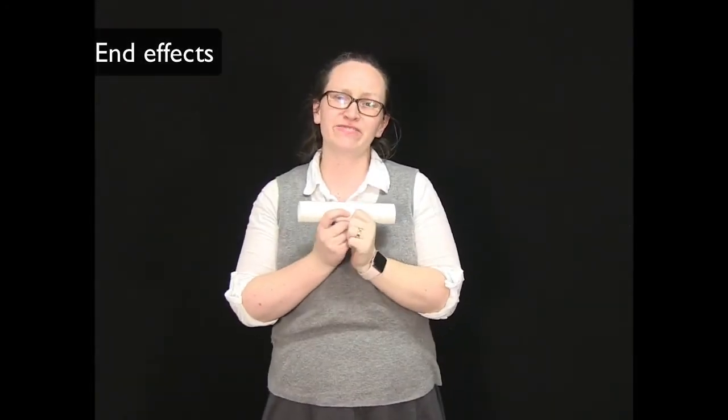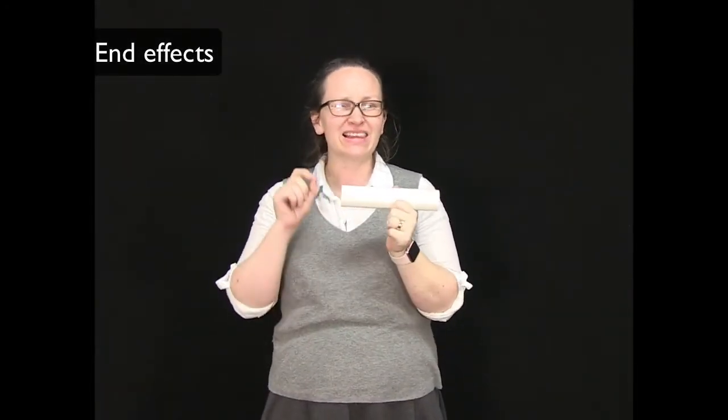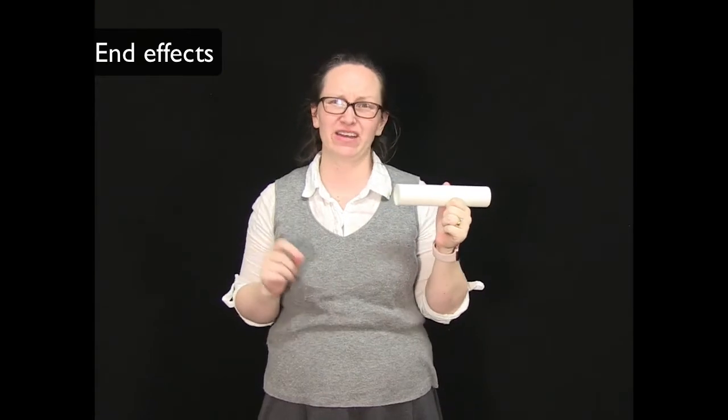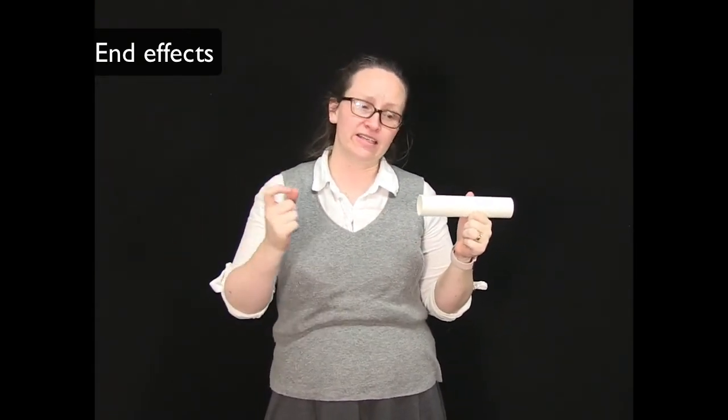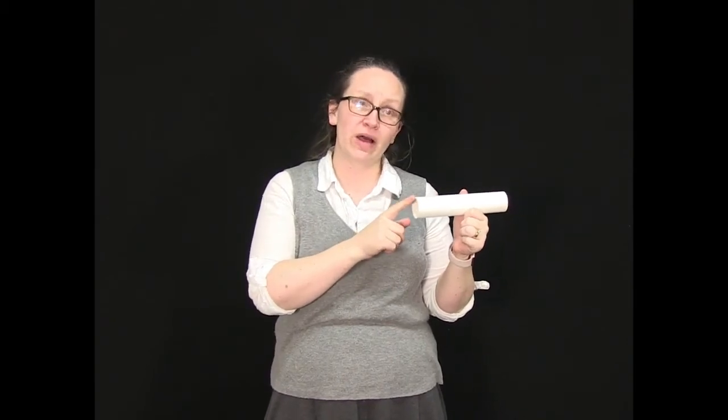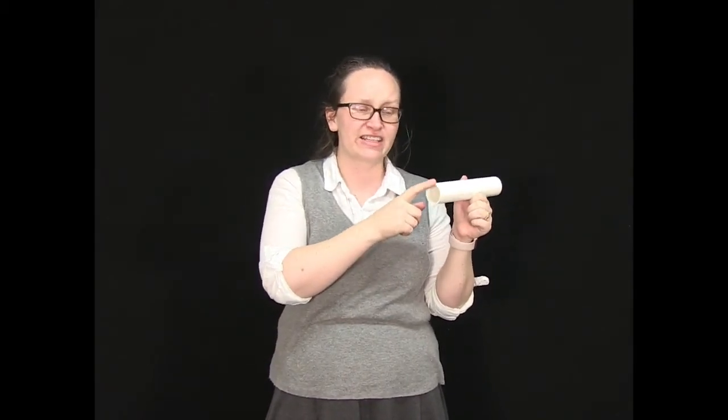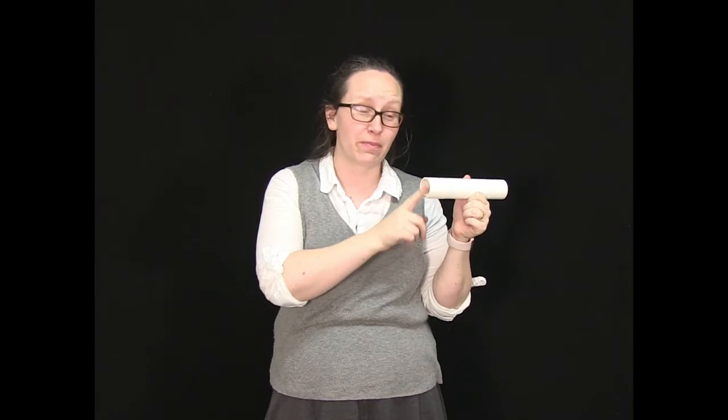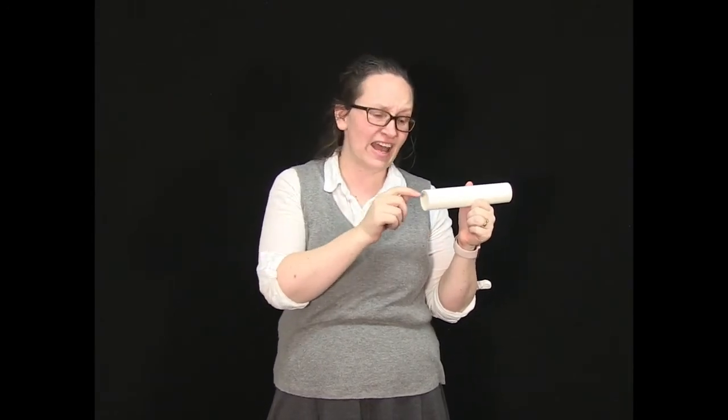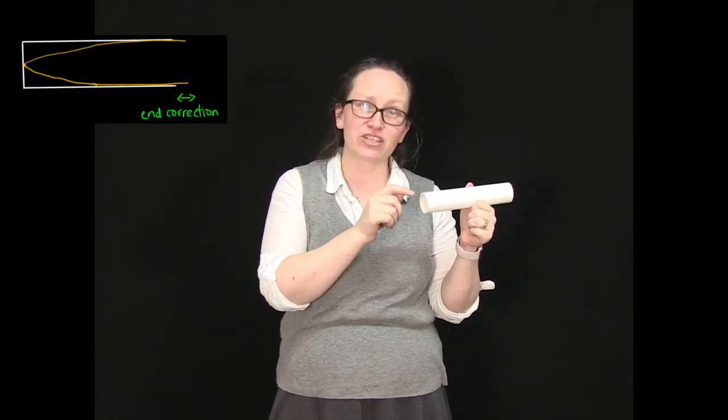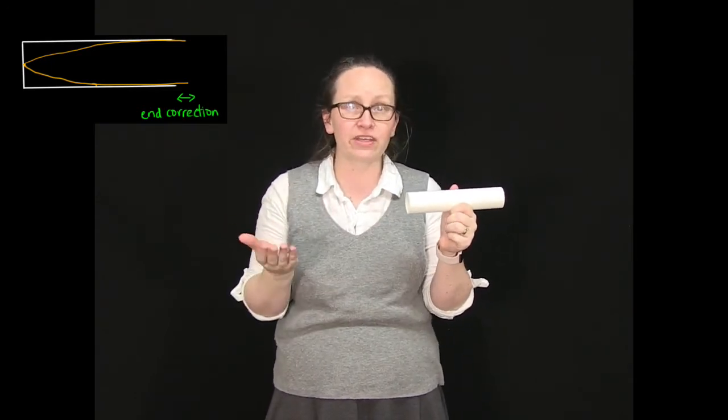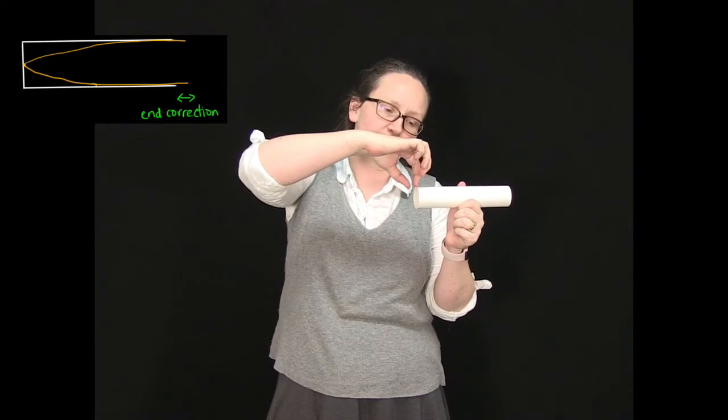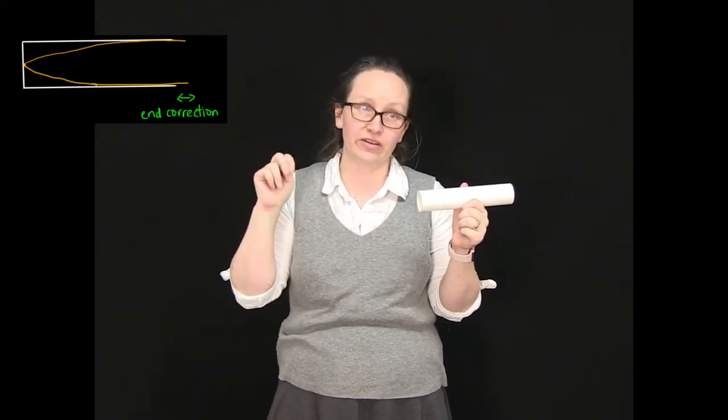Now unfortunately the reality does turn out to be a little bit more complicated than what I've actually just presented you with. In reality, the anti-node of the wave is not actually exactly aligned with the end of the pipe. In reality, the anti-node is a little bit outside the end of the pipe, and so we can account for this by calling that length the end correction.